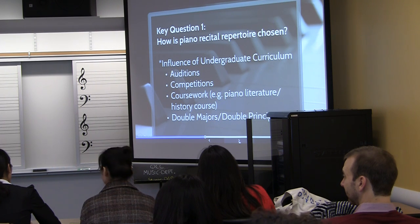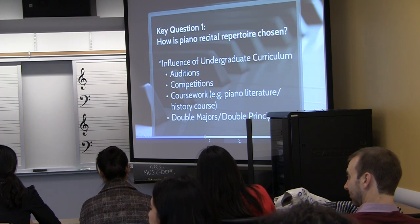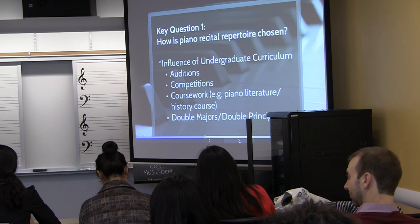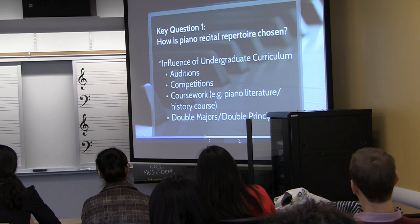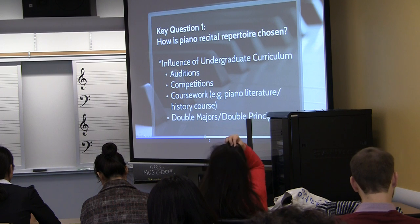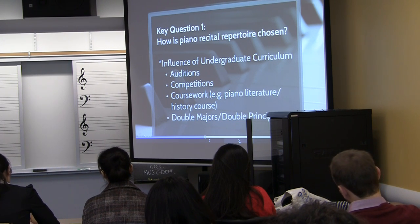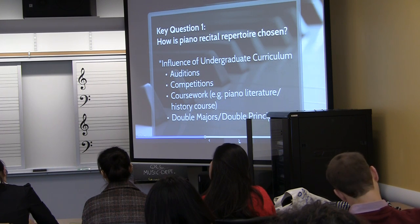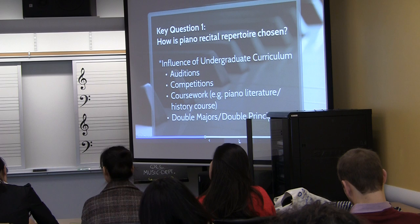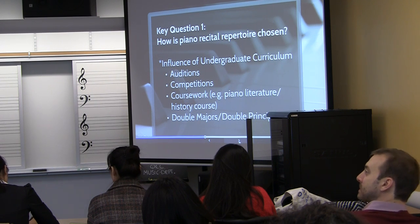Graduate school auditions were a huge factor in how students would select repertoire for their recitals. If you look at the requirements for master's programs, they're similar at each school: a piece by Bach, a classical sonata movement, a romantic work, and then 20th century and beyond — except Rachmaninoff, which doesn't count apparently. Competitions, to a lesser extent, were also a factor. Many students talked about encountering pieces in their piano literature courses, or music history or music appreciation courses — often taught by someone outside of piano who nonetheless brought them to that piece.